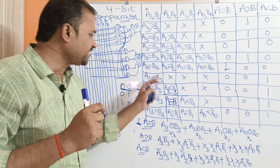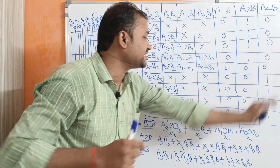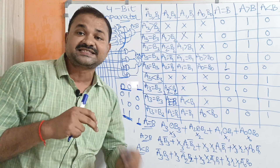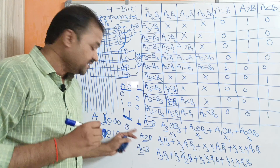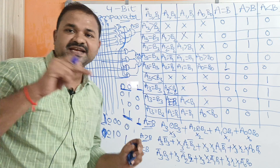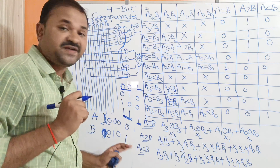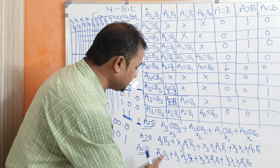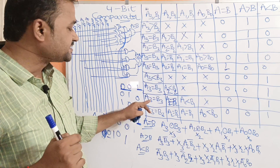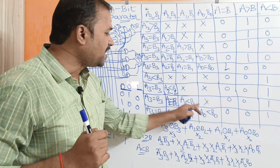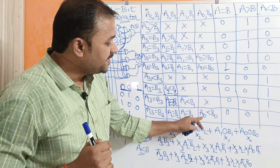Likewise, we can write for A less than B. The four combinations are: A3̄·B3, X3·A2̄·B2, X3·X2·A1̄·B1, and X3·X2·X1·A0̄·B0. So A less than B = A3̄·B3 + X3·A2̄·B2 + X3·X2·A1̄·B1 + X3·X2·X1·A0̄·B0.